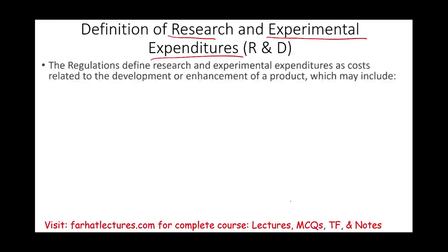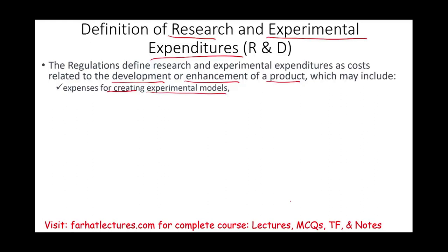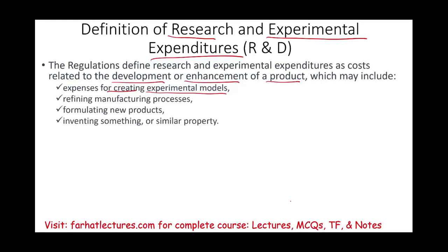The regulation defines research and experimental costs as costs related to the development or enhancement of a product, which may include expenses for creating an experimental model — you're trying to create something new — refining and manufacturing processes, formulating a new product, creating a new product, inventing something, or similar property.